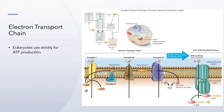Here we have the electron transport chain in eukaryotic organisms. In eukaryotes, the electron transport chain is used strictly for ATP synthesis — not for transport and not for flagella. Also, the eukaryotic electron transport chain has four subunits instead of three: complex one, two, three, and four. Of course, in our cells we use oxygen as our terminal electron acceptor.